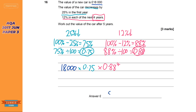The answer is 8095.887, so rounding to the nearest penny that's £8,095.89. I'm sure you could round to the nearest pound or even more — just always make sure you write down somewhere what you've rounded it to, unless it's to the nearest penny, because that's pretty obvious.